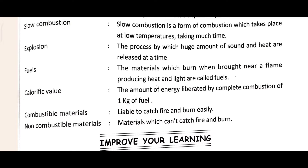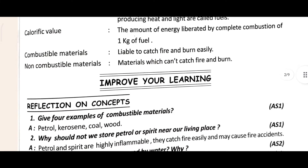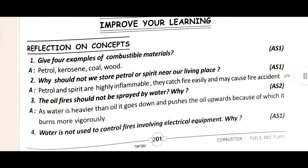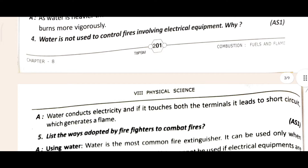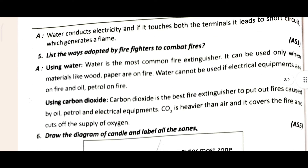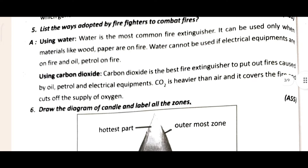Come to 'Improve Your Learning.' In 'Reflection of Concept,' the first question is: give four examples of combustion material. The second question is: why should we not store petroleum near our living place? Then there is a third and fourth question with answers below. The fifth question and its answer are also given.